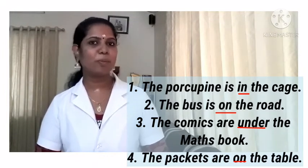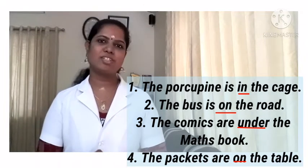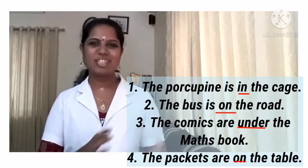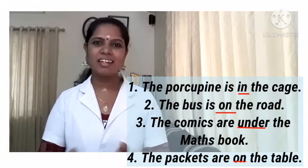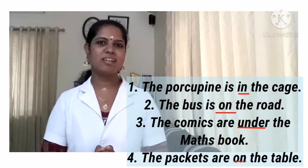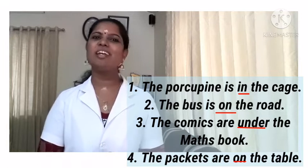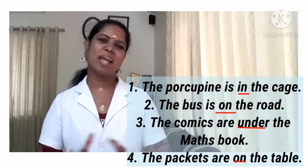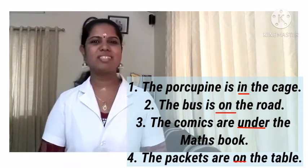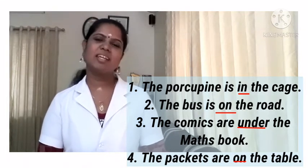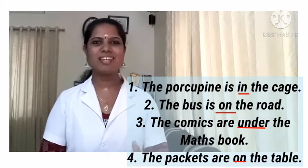Let's look at the other examples. The porcupine is in the cage — the word 'in' brings a relationship between porcupine and cage. The bus is on the road — 'on' brings a relationship between bus and road. The comics are under the max book — 'under' brings a relationship between comics and max book. So what is the function of a preposition? A preposition is placed before nouns and it shows a relationship between a noun or pronoun in a sentence to another word in a sentence.